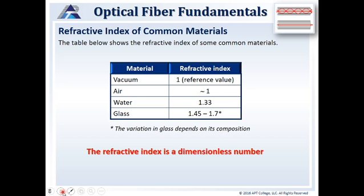The refractive index of common materials: in a vacuum it's 1.0, because we're dividing the speed of light in a vacuum by itself. The speed of light through air is so close to the speed of light in a vacuum, we can call it essentially the same. Then the speed of light through water is about 75 million meters per second slower, giving us a 1.33 refractive index. For glass, it varies depending on what the glass is doped with. Refractive index is a dimensionless number — it's just 1 or 1.33, with no unit quantifier.